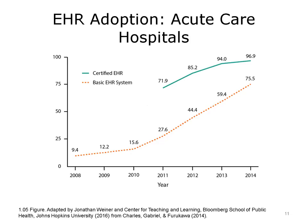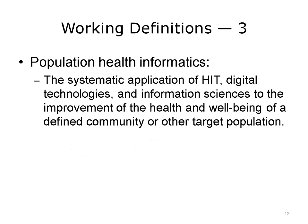The possibilities for the new field of population health informatics represent a huge opportunity to improve the nation's health. The definition of population health informatics is the systematic application of health IT and other digital technologies and information sciences to the improvement of health and well-being of a defined community or other target population. Trying to understand how one uses the raw data, the technology, and devices to improve the health of populations is what this entire component is all about. And it goes beyond the HIT and the informatics — we must also take into consideration public health and clinical and healthcare management methods and principles.